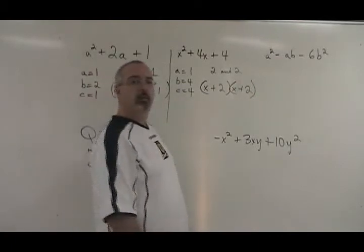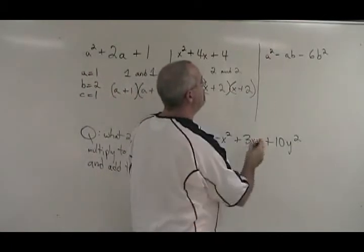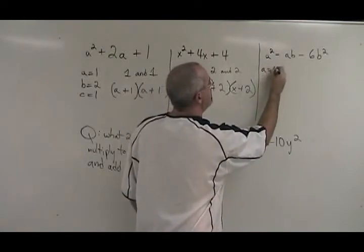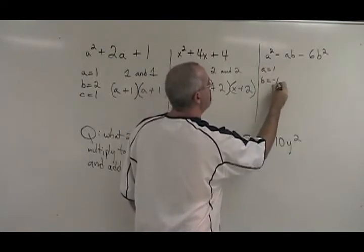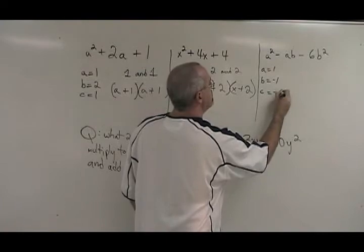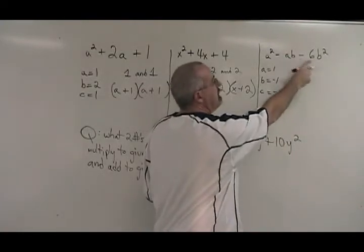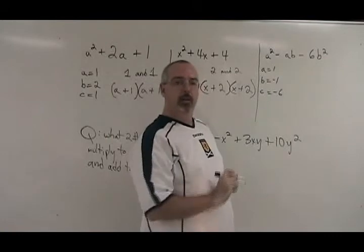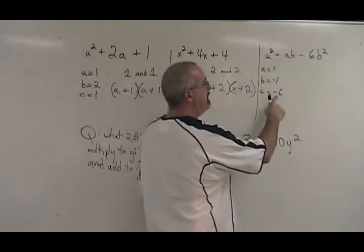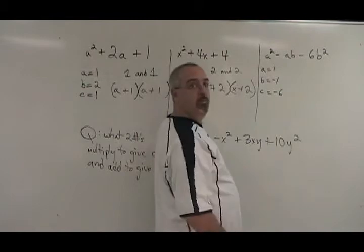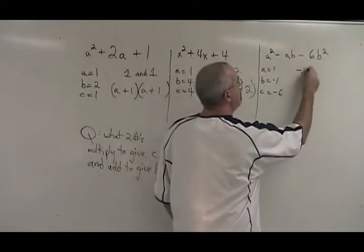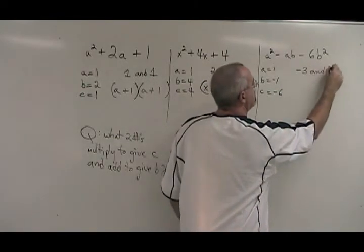What does it look like if you have negative signs involved in the expression? Here, our a is 1, our b is negative 1, and our c is negative 6. We not only have negative signs, we also have this letter b involved. But the method is the same. What two numbers multiply to give negative 6 and add to give negative 1? That's going to be negative 3 and positive 2.